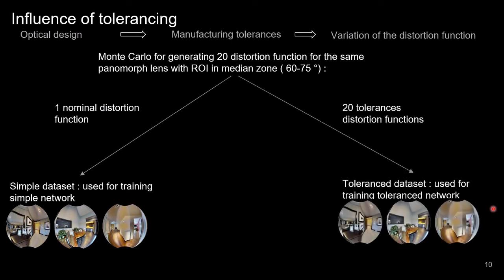Then, a second network was trained. At each iteration, the warping was performed by randomly picking one of the 20 generated functions to create a tolerance dataset. Both networks were then compared and tested on a tolerance test dataset at inference time.